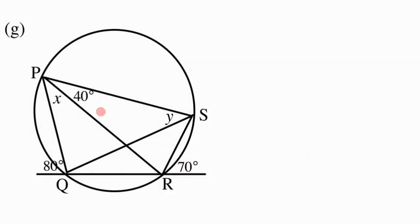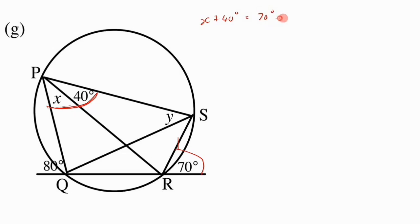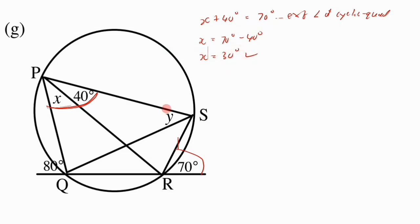For part g, we need to find x and y. We have an exterior angle of 70 degrees, which equals the opposite interior angle. The opposite interior angle is x plus 40, so x plus 40 degrees equals 70 degrees — exterior angle of cyclic quad. Therefore x equals 70 minus 40, giving x equals 30 degrees.